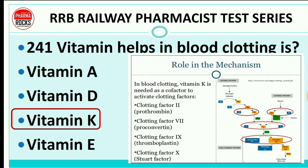Vitamin K ka role hai mainly in blood clotting. Vitamin K is needed as a co-factor to activate the clotting factors — clotting factor 2 (prothrombin), clotting factor 7, factor 9, factor 10, Stuart factor, thromboplastin, proconvertin — inki activation ke liye vitamin K required hoti hai. So vitamin K helps in blood clotting.